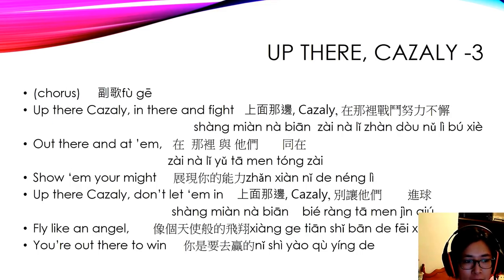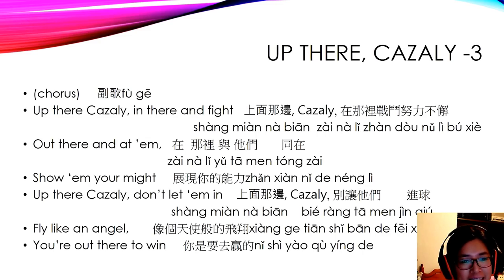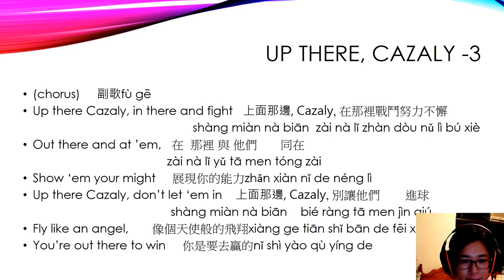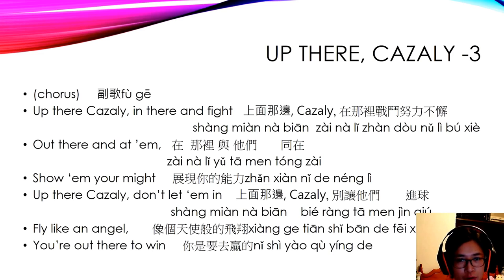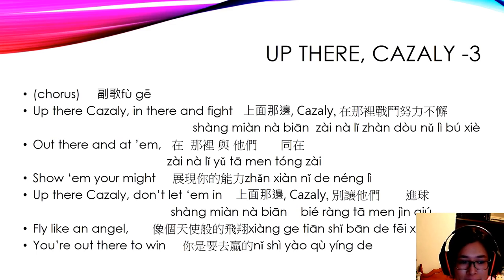Chorus 副歌。 Up there Cazaly — 刻在 — in there and fight — 在那里战斗不懈 — out there and at 'em — 在那边与他们同在 — show them your might — 展现你的能力。 Up there Cazaly, don't let them in — 别让他们进球。 Fly like an angel — 像个天使般的飞翔。 因为澳式足球呢，他们可以在球飞翔的中间去拦截做任何事情，所以他们有时候就会凌空飞翔去接球或阻挠球，希望能够像天使般的飞翔。 You are out there to win — 你是要去赢的。